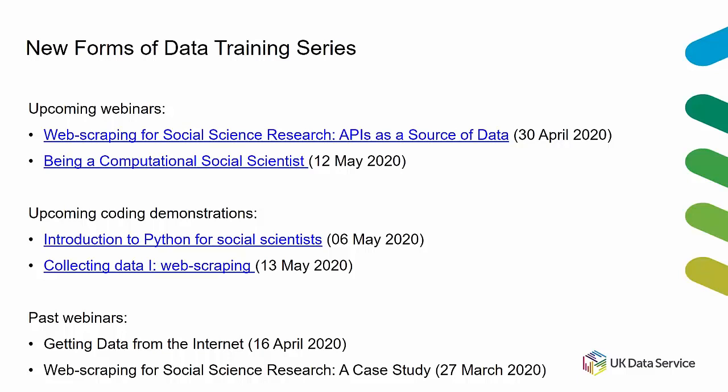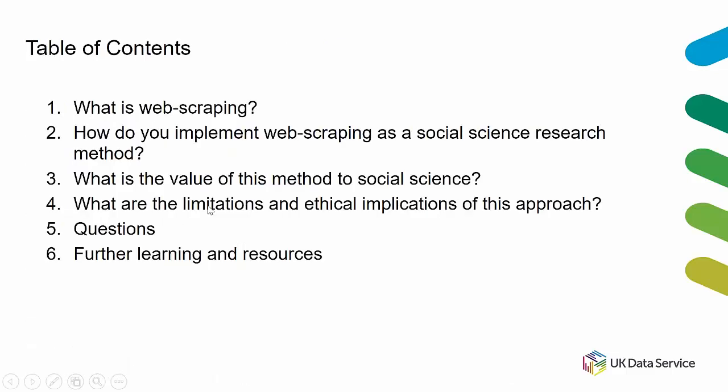We have a further webinar looking more broadly at what it takes to be a computational social scientist. We've got a fairly novel development — we're going to do some live coding demonstrations on a different platform. There are four in May, every Wednesday, beginning on the 6th. These are free, roughly half an hour. I'll present a piece of social science analysis and teach you programming through that. These are focused on Python. You can find all these events on the UK Data Service events page.